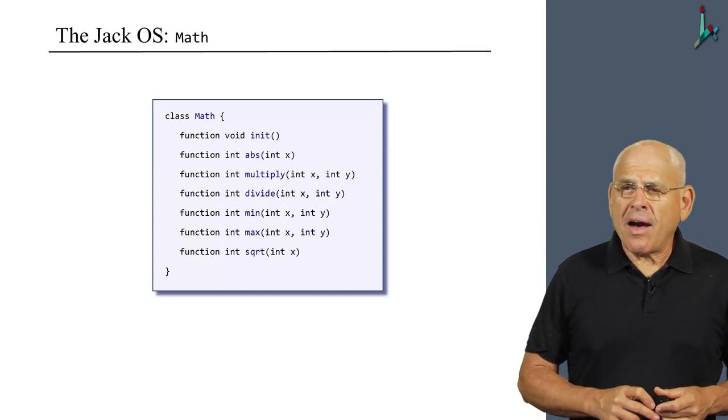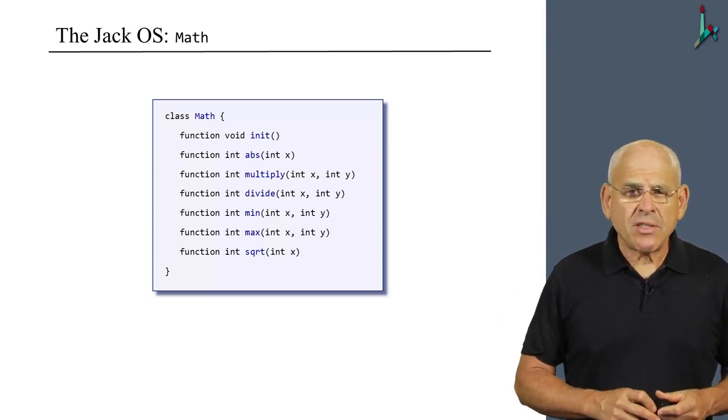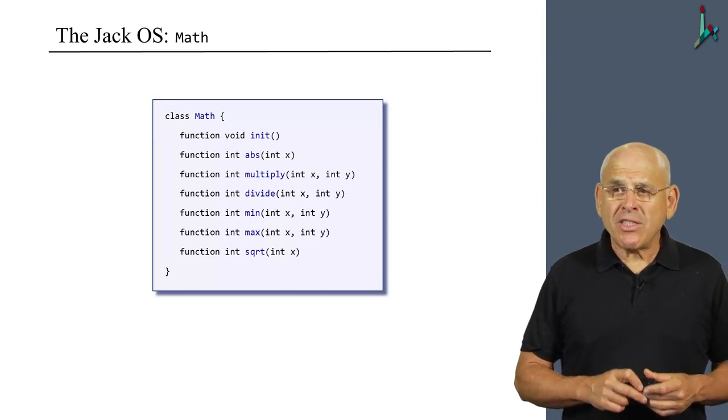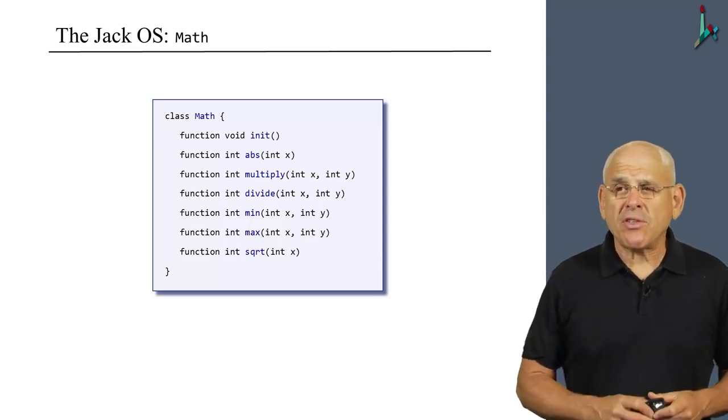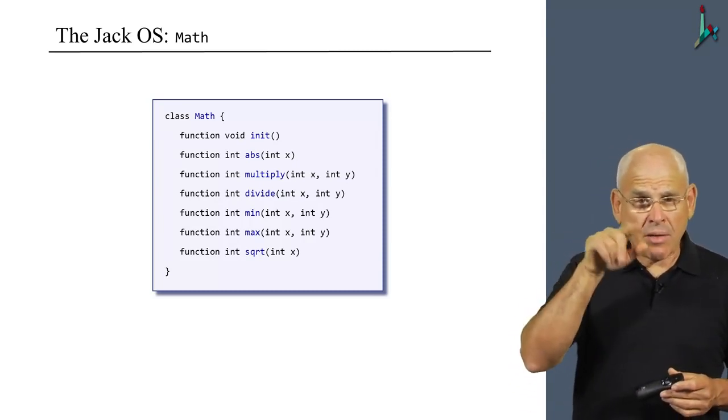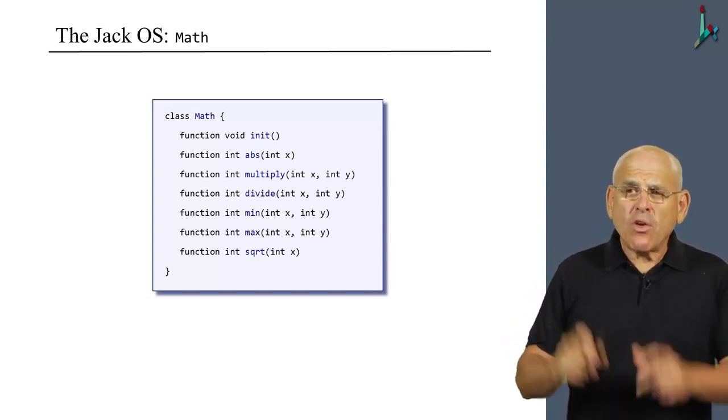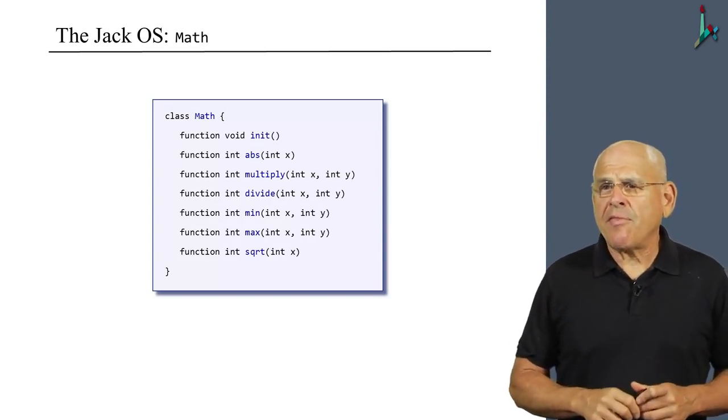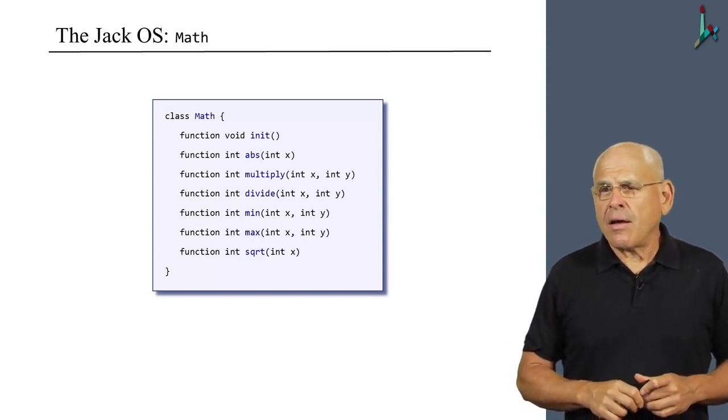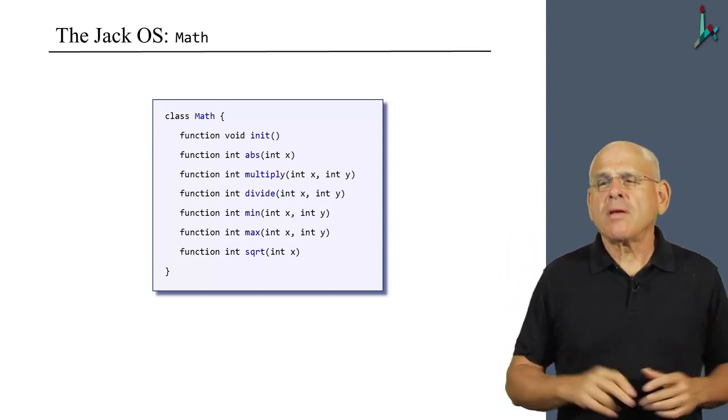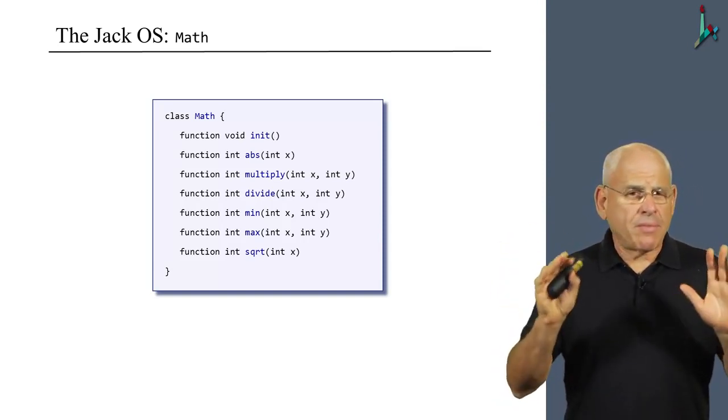Multiply and divide are two functions that you don't actually need when you develop regular applications in Jack because the Jack language features a multiply operator, asterisk, and a divide operator, slash. But you will need these functions for some other purposes when writing the compiler.